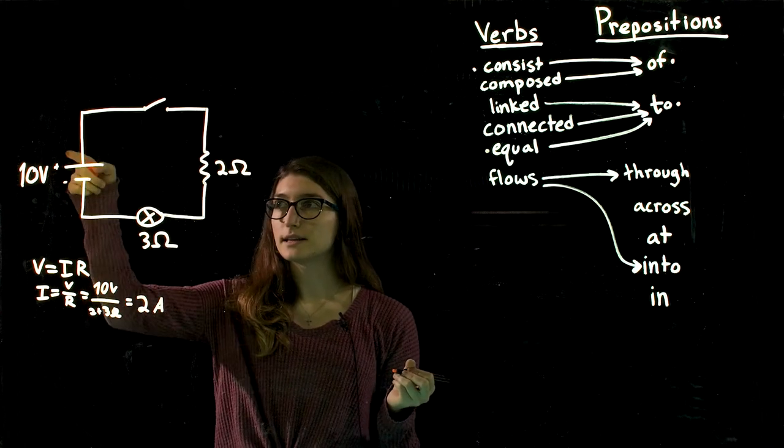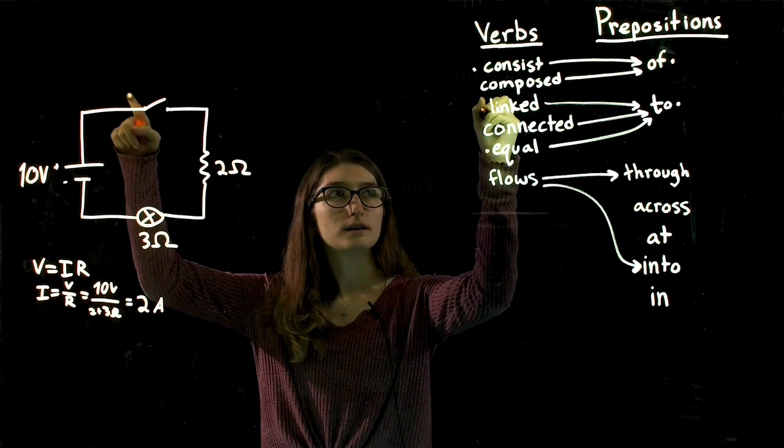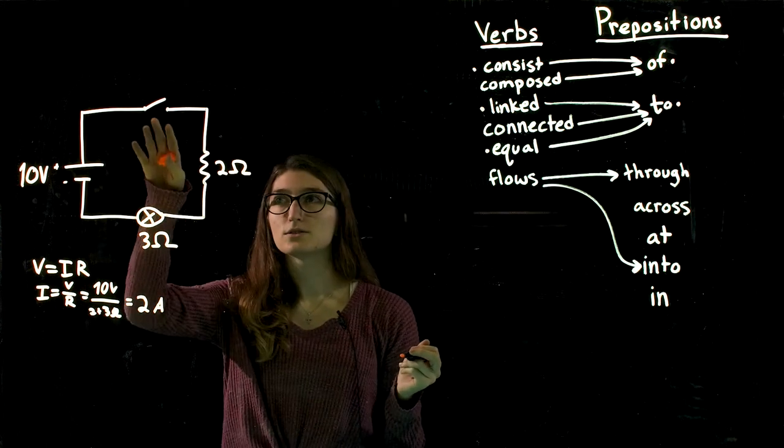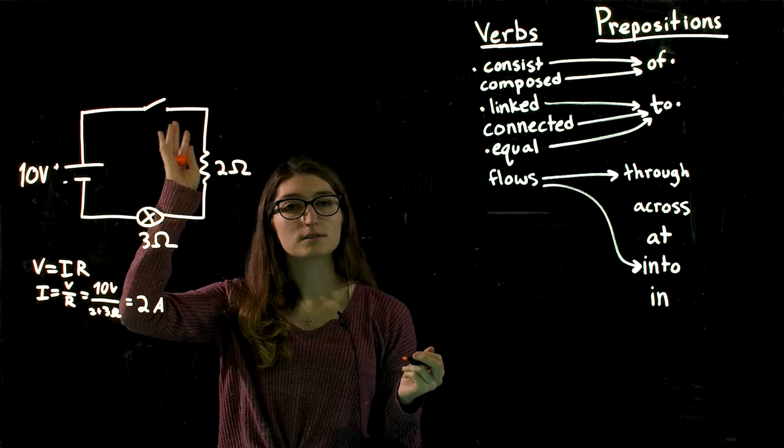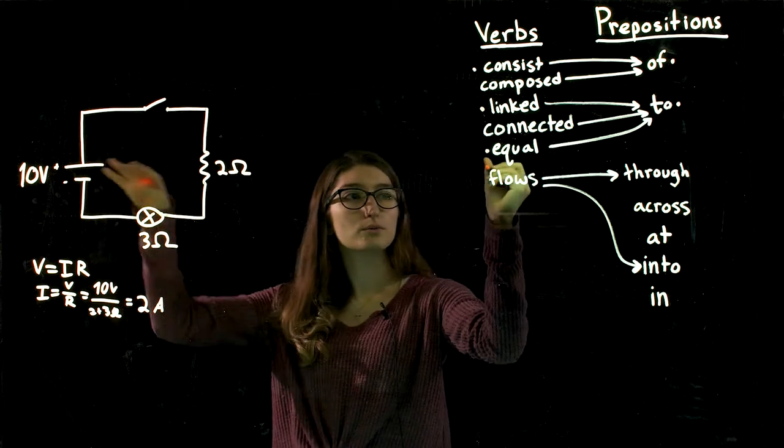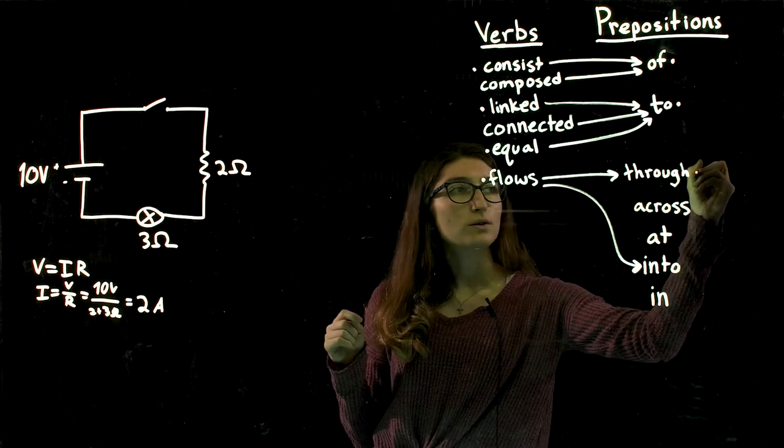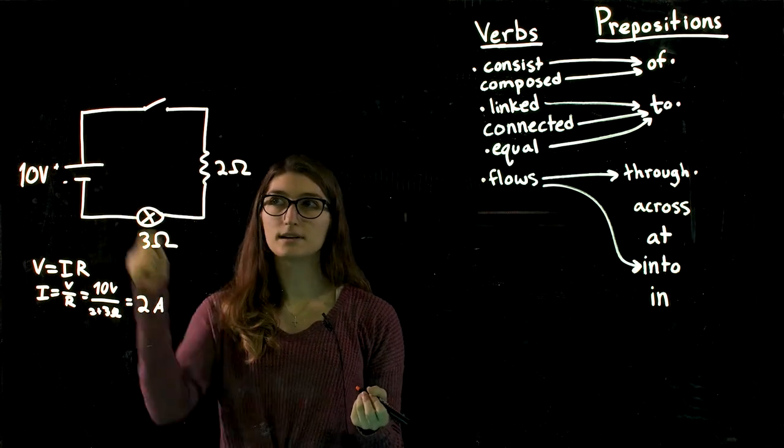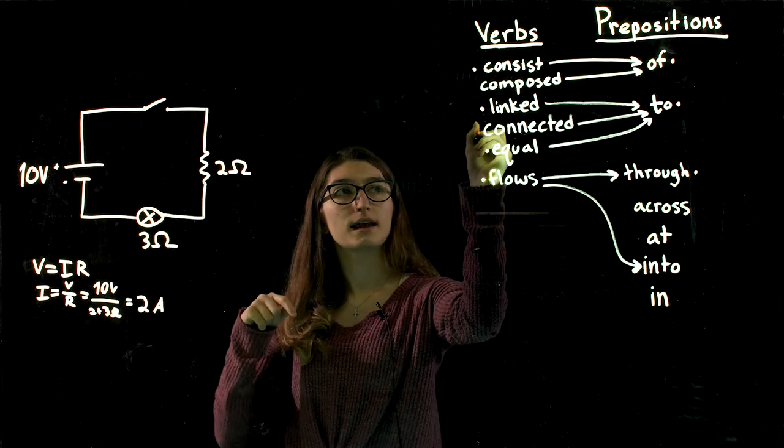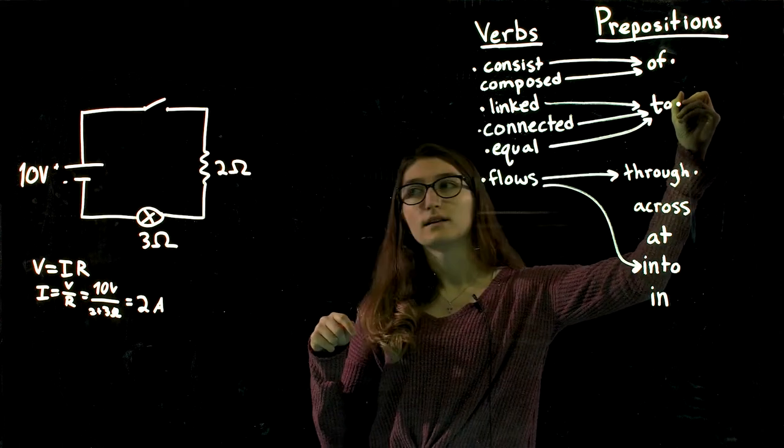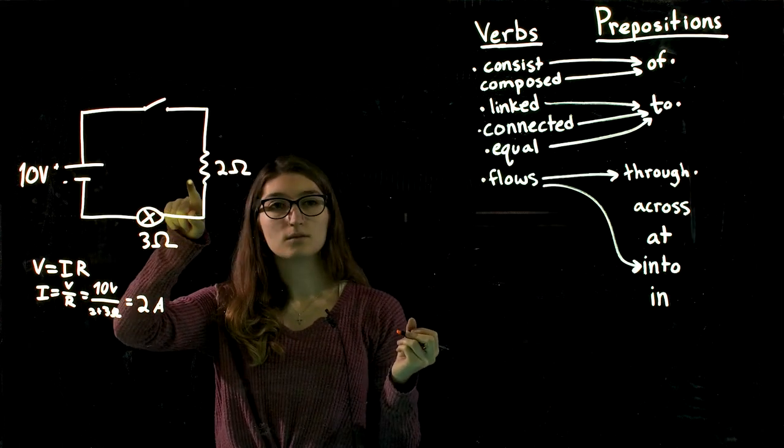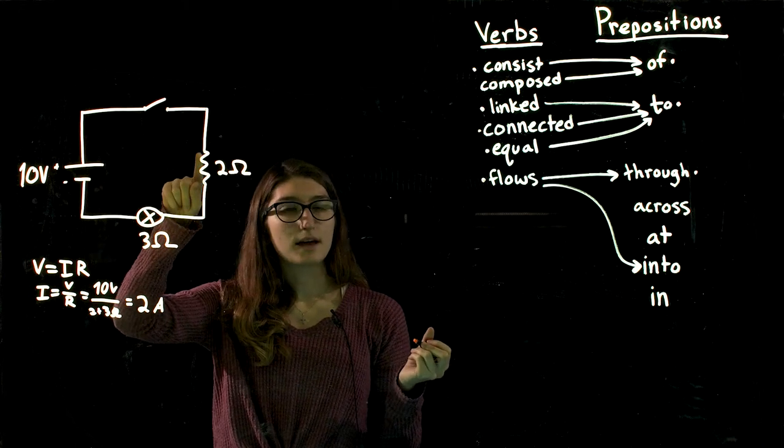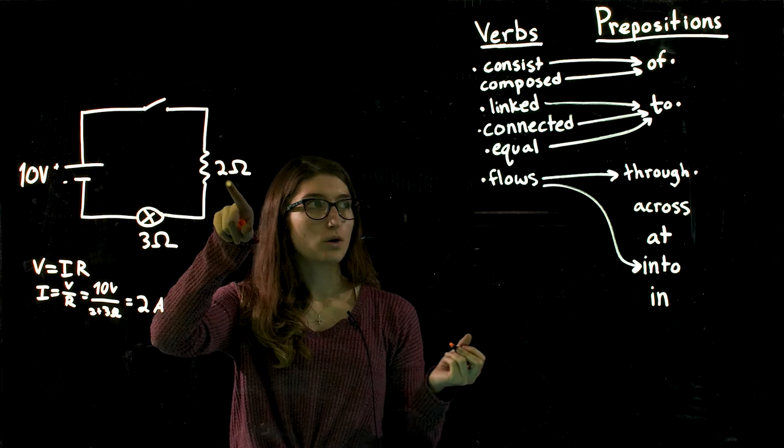The battery is then linked to the switch and the switch, when closed, allows electricity to flow through the circuit. When the switch is open, electricity cannot flow through the circuit. This is then connected to resistor 1 and resistor 1 has a value of 2 ohms.